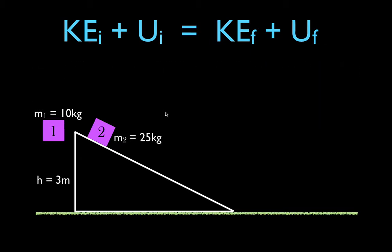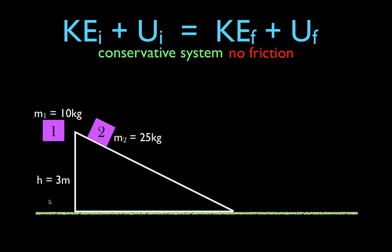We're going to use our equation for conservation of mechanical energy. This is a conservative system, meaning there are only conservative forces and no non-conservative forces — basically no friction. When object one falls, we'll ignore air resistance. When object two comes down the ramp, we'll say there's no friction between the object and the ramp.